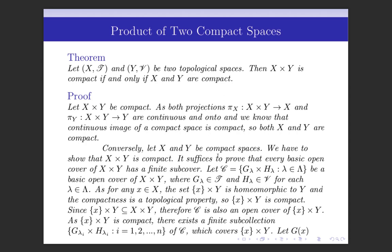Conversely, let X and Y be compact spaces; then we have to prove that X cross Y is compact. Since every basic open cover of a topological space has a finite subcover if and only if every open cover of that topological space has a finite subcover, it suffices to prove that every basic open cover of X cross Y has a finite subcover. So we take a basic open cover of X cross Y and show that there exists a finite subcover of that basic open cover.